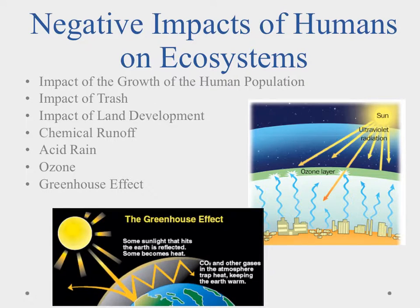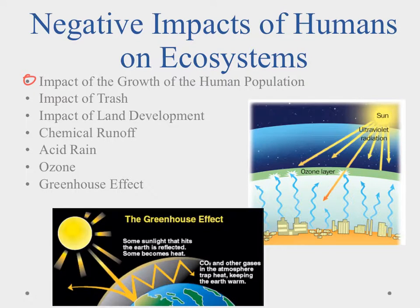When we look at our negative impacts we have to look at the impact of growth of the human population, and as we get bigger, we have to make places for us to live. In doing so we're destroying native habitats or natural habitats to put in new cities and towns and houses and things of that nature.